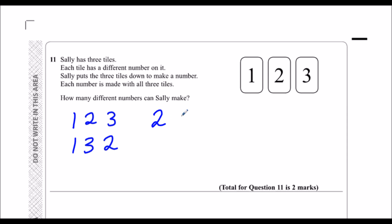Then if I put two first, I can have one then three, or I could have three then one. So there's two combinations with a two first, and finally 312, or 321. So how many different numbers can Sally make? She can make six different numbers.